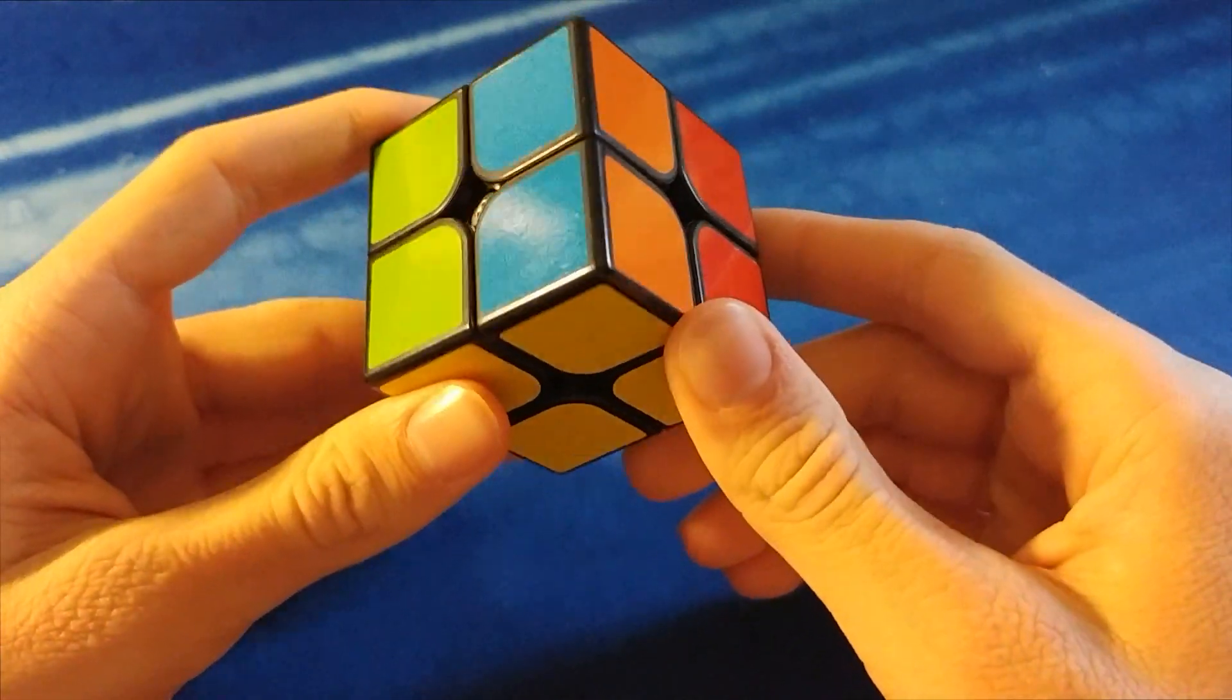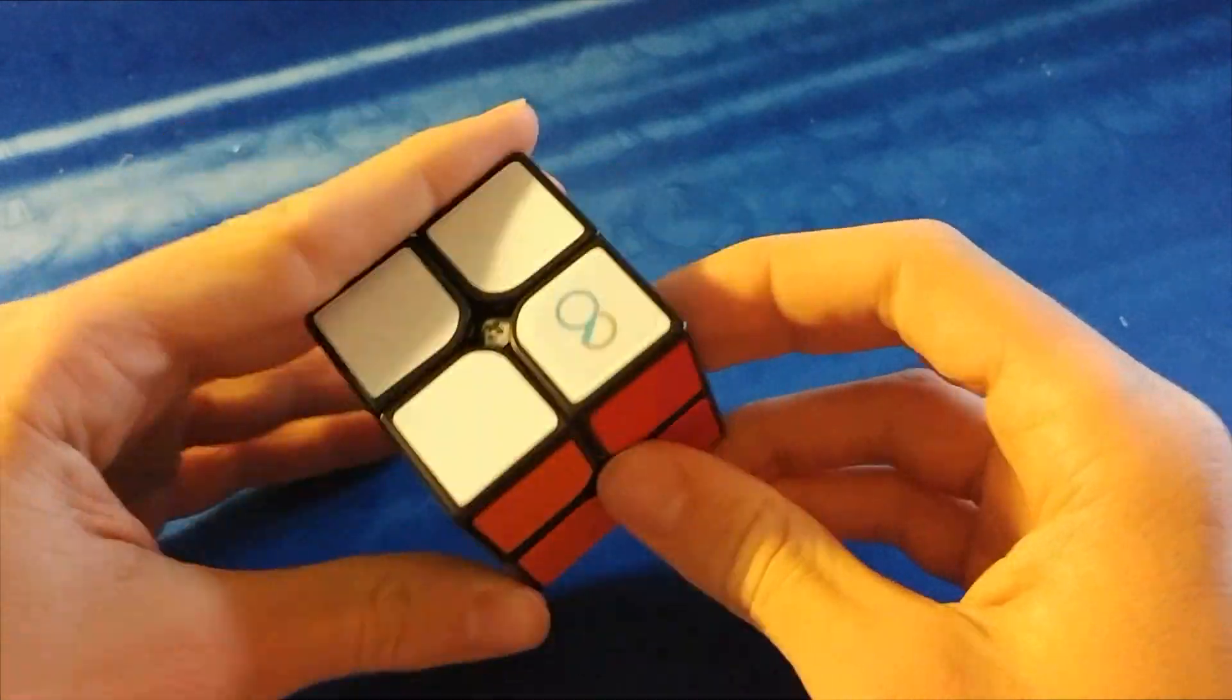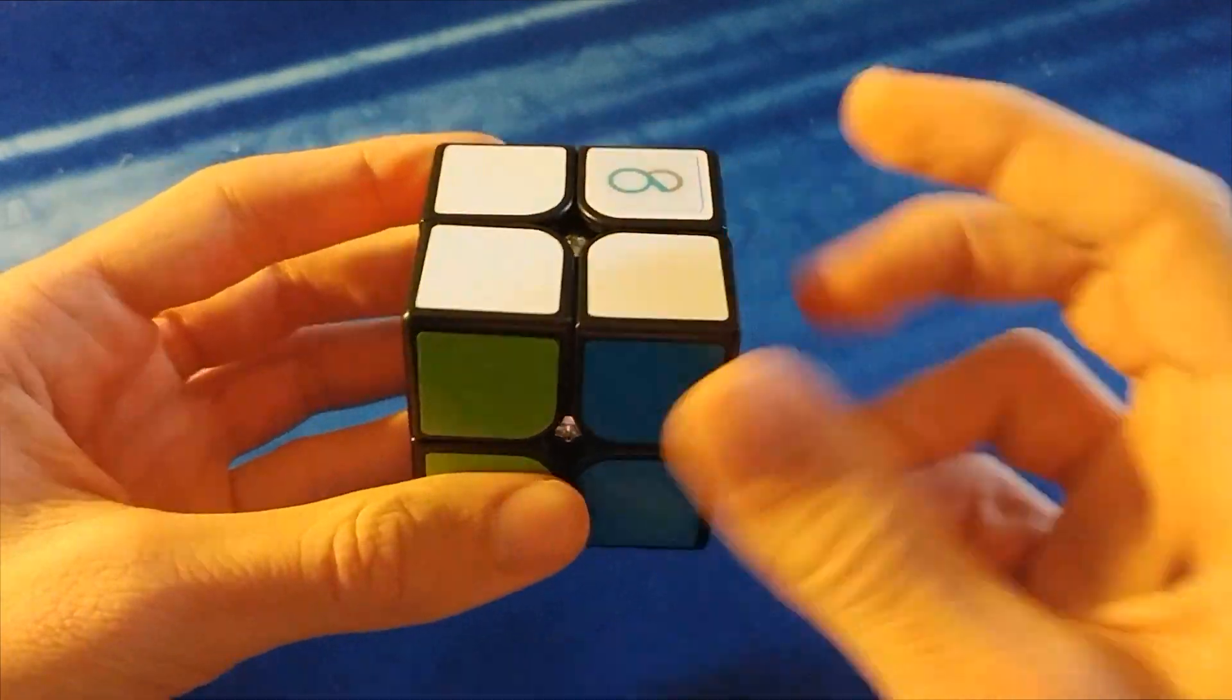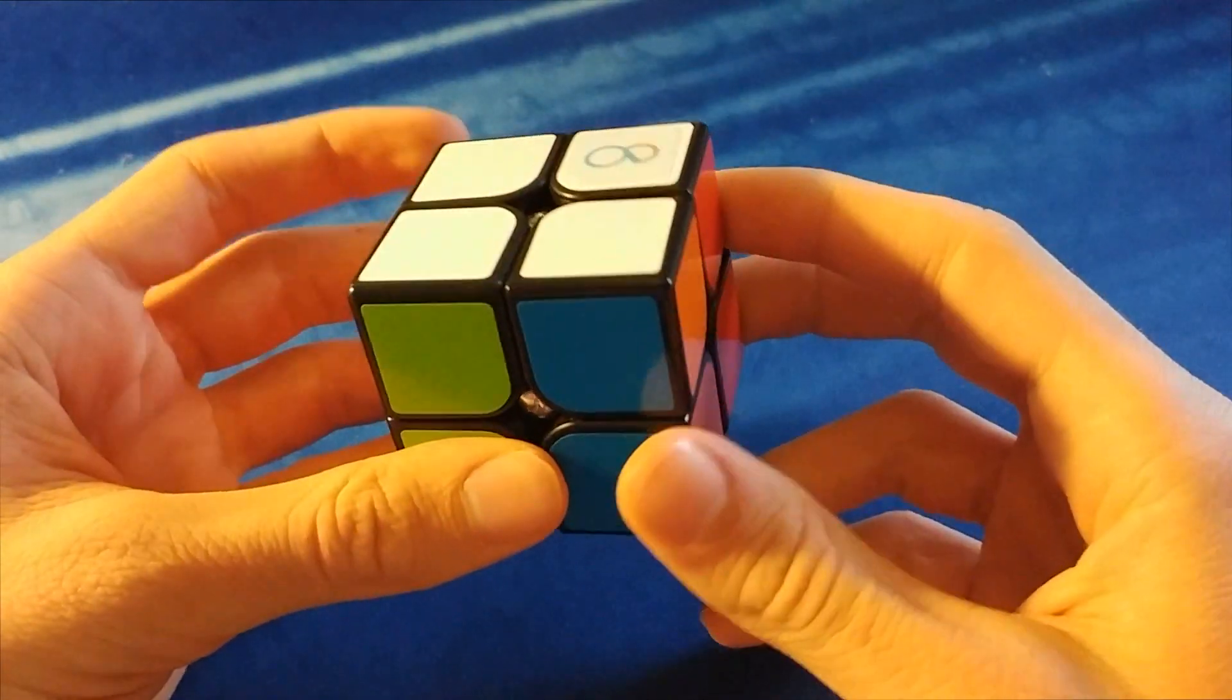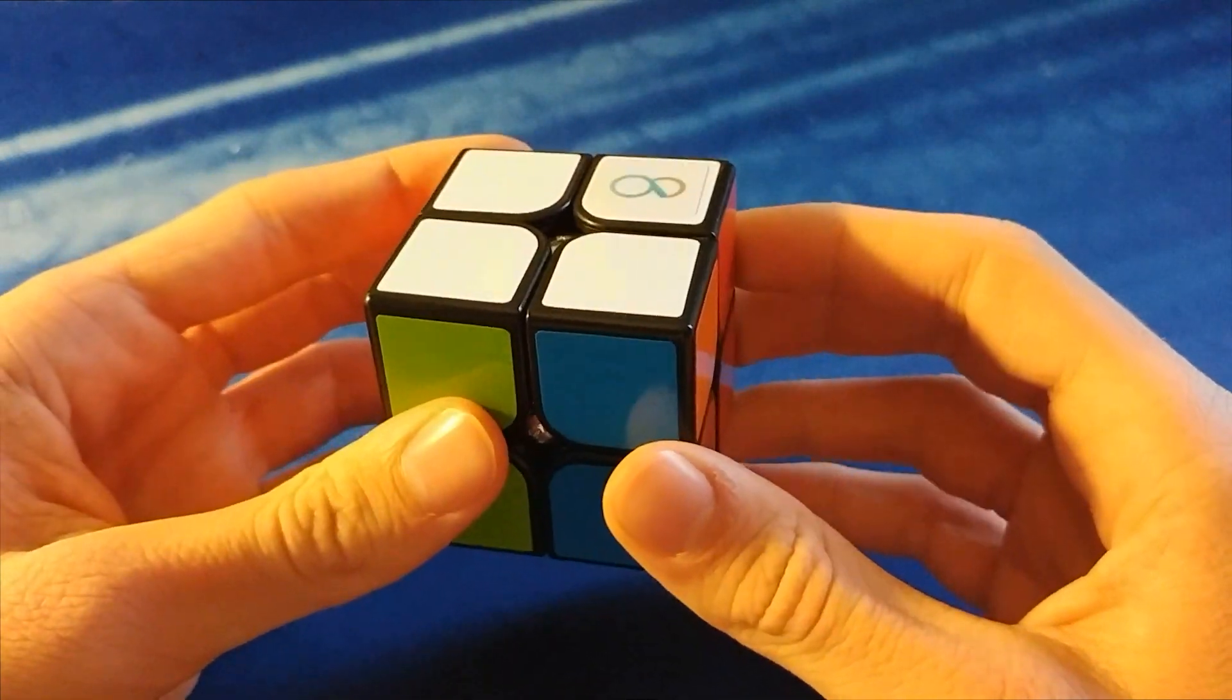All right, for this case, we have no two pairs, so you can see that this needs to be swapped with this, and this needs to be swapped with this, so they're all diagonal swaps, so what we're going to do is, this is the easiest case, it's just R2 U2 R2.